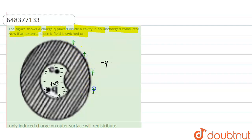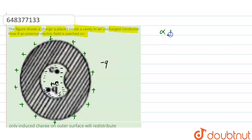On the outer surface there will be positive charges induced, and these positive charges will be distributed uniformly on the outer surface. There will not be any case of denser charges on one side and less dense on the other, because this is a sphere and the charges induced are inversely proportional to the radius of curvature — and since the radius is constant everywhere, charges are induced uniformly.